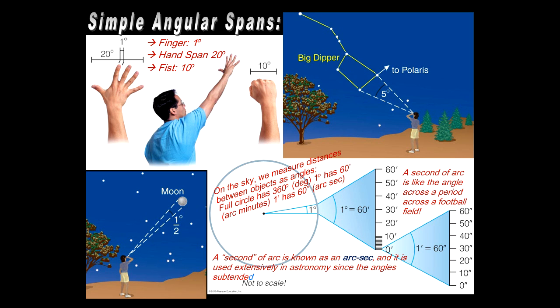A second of arc is known as an arc second. That's the term that's used. And astronomers use that because the objects that we're observing are so far away, and the angles are subsequently extraordinarily tiny.